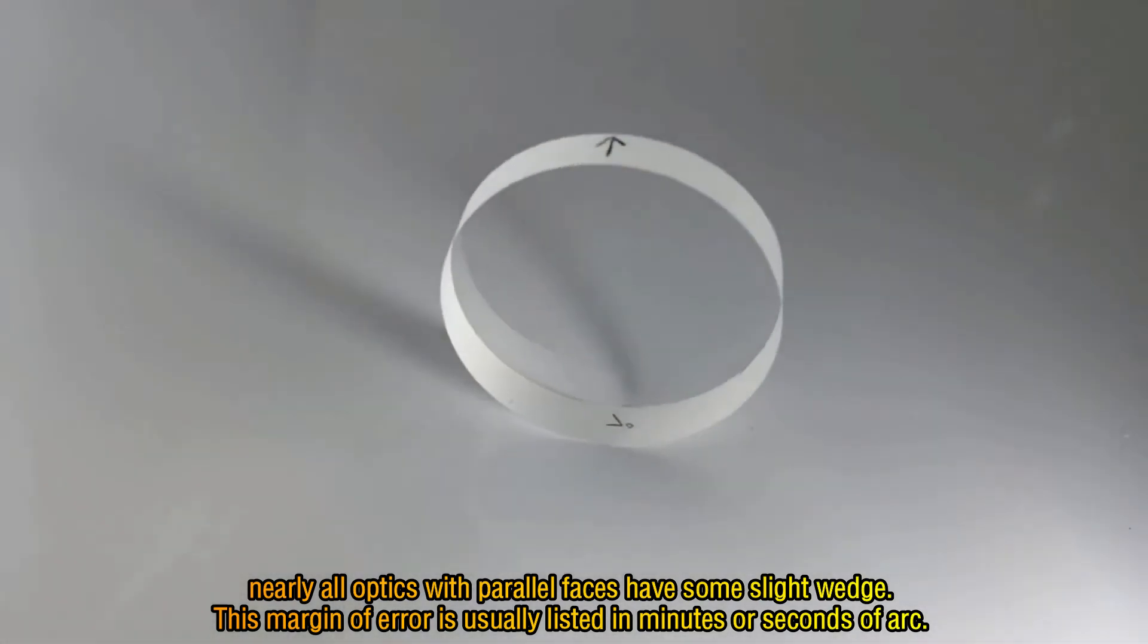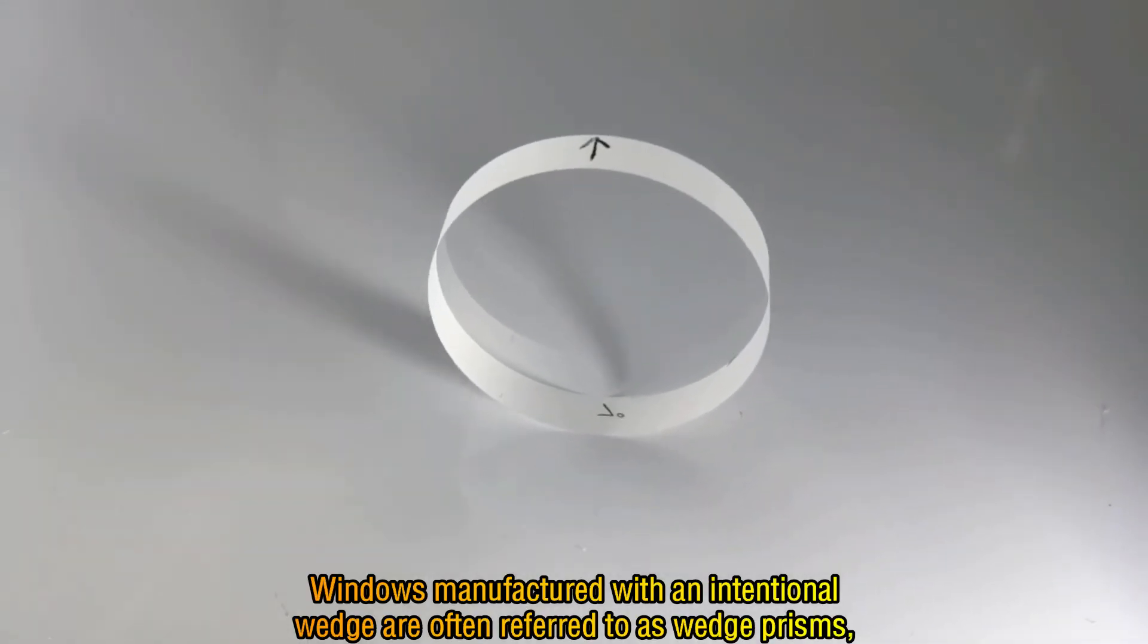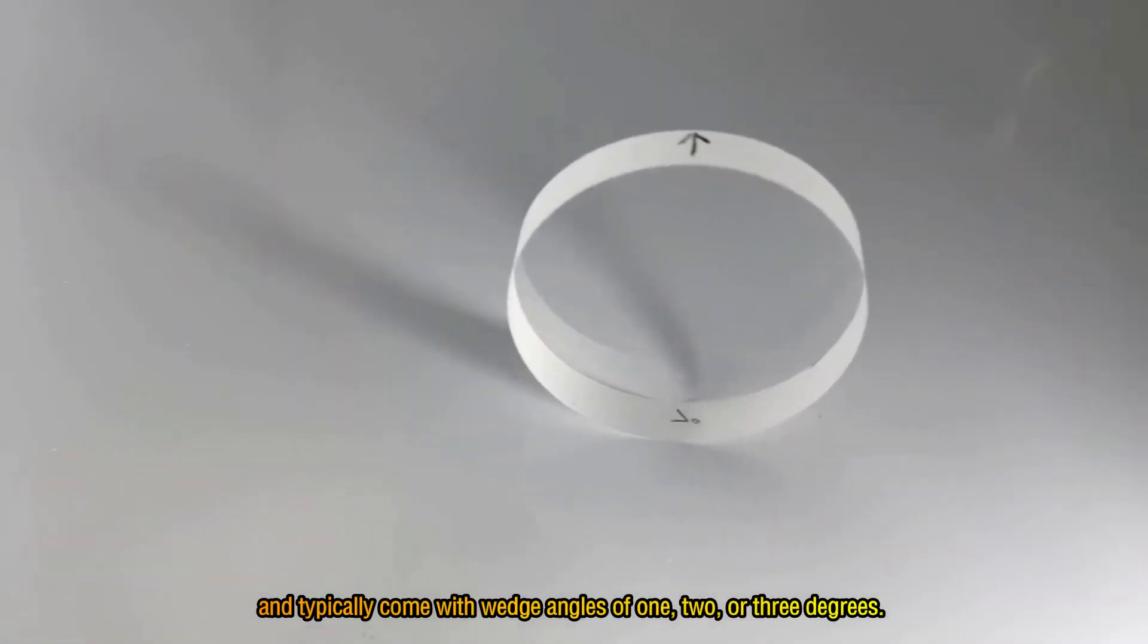This margin of error is usually listed in minutes or seconds of arc. Windows manufactured with an intentional wedge are often referred to as wedge prisms and typically come with wedge angles of 1, 2, or 3 degrees.